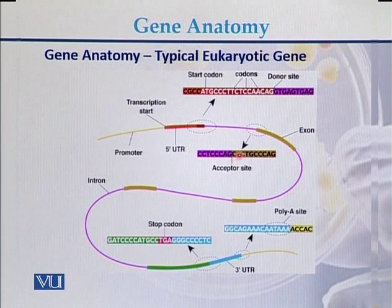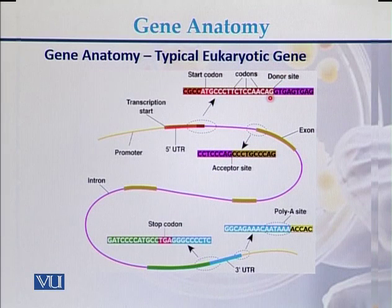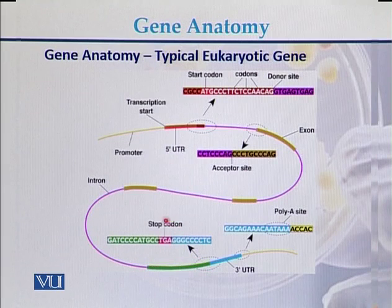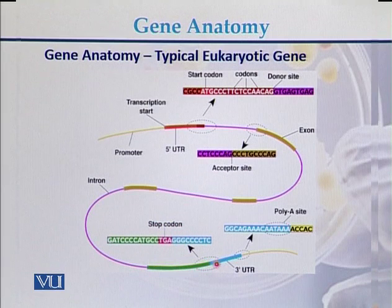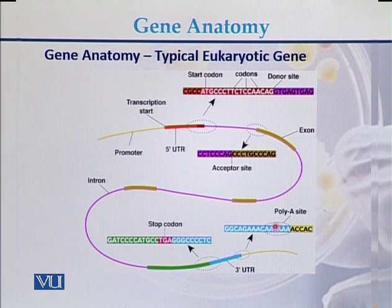At the boundary of the intron and exon there is an acceptor site. The donor site sequence can be GT and the acceptor site ends with AG. At the end of the gene there is a stop codon TGA, followed by the three-prime UTR region. At the end of the three-prime UTR region there is a poly A signal sequence AATAAA, which is the poly A tail.